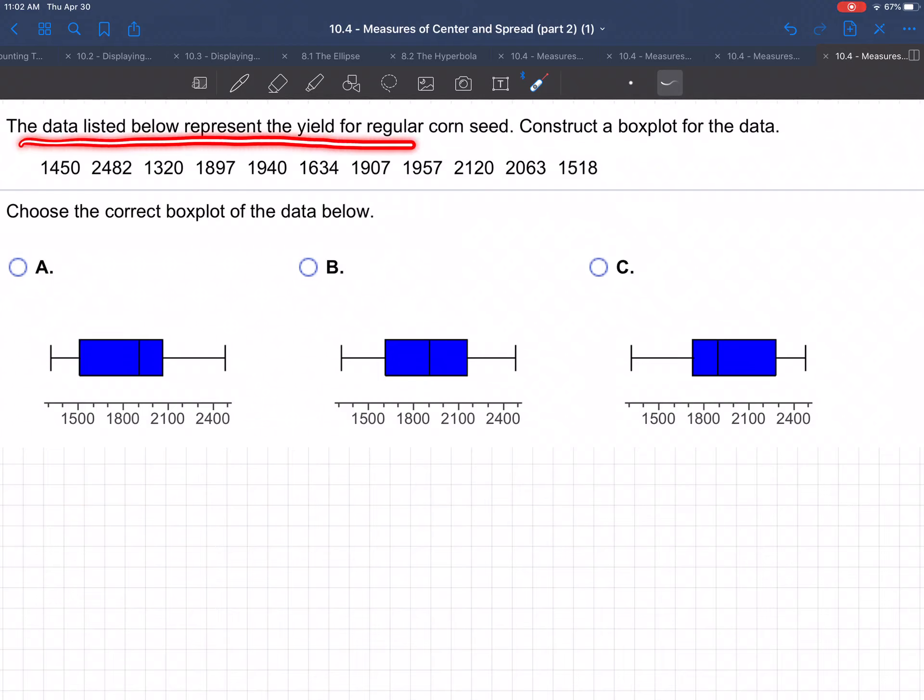The data listed below represent the yield for regular corn seed. Construct a box plot for the data.